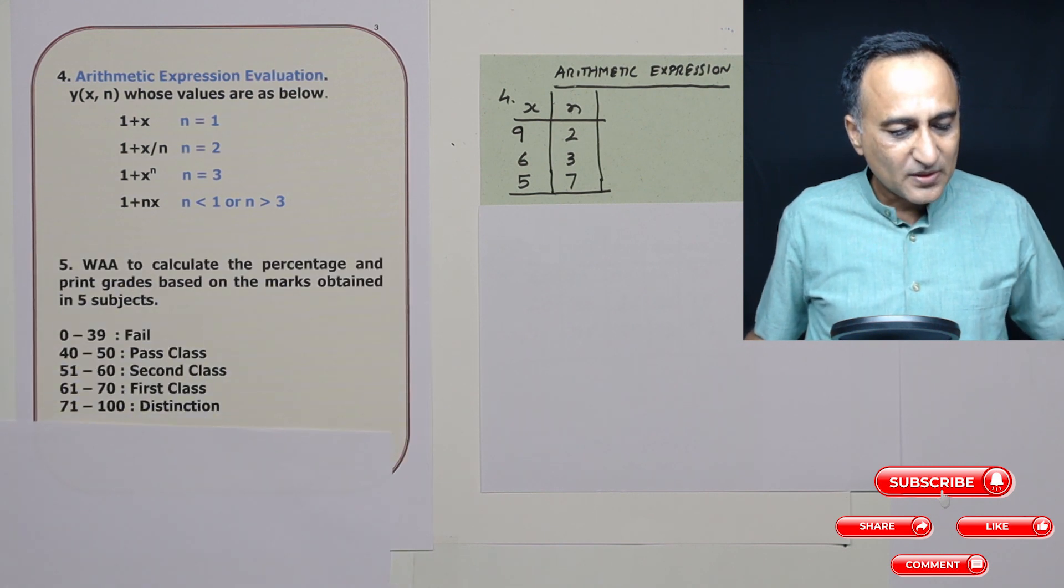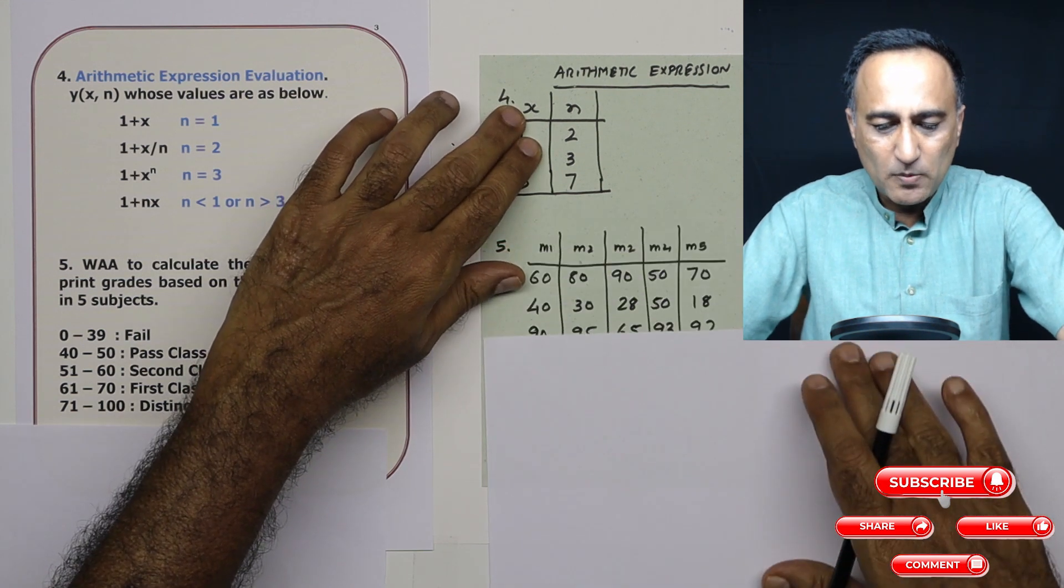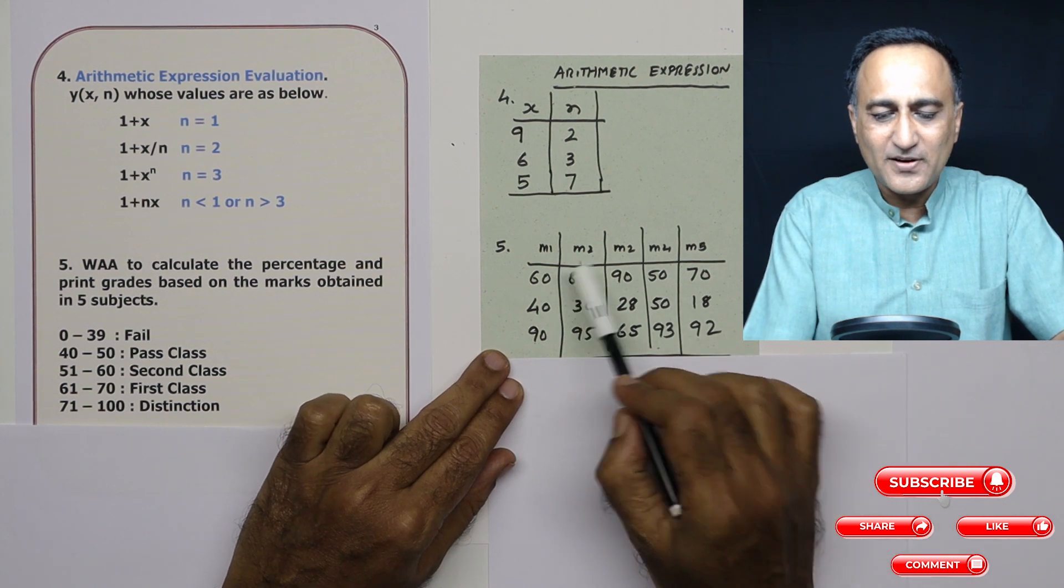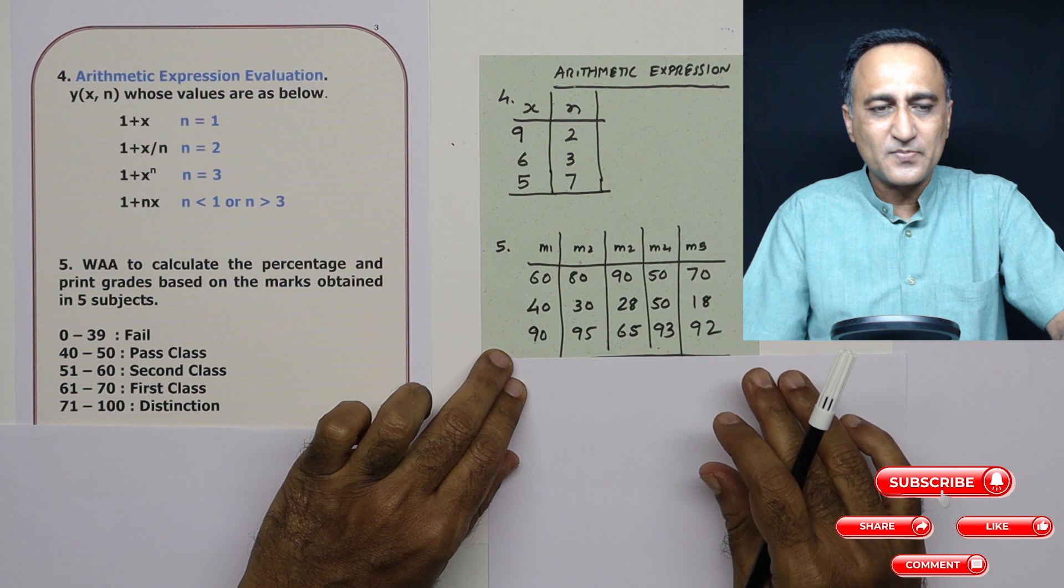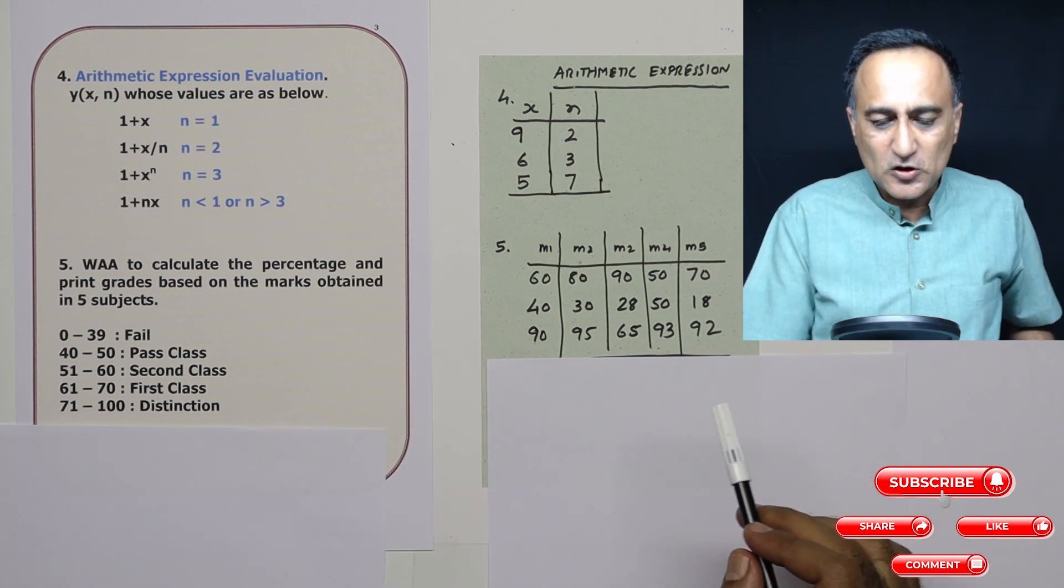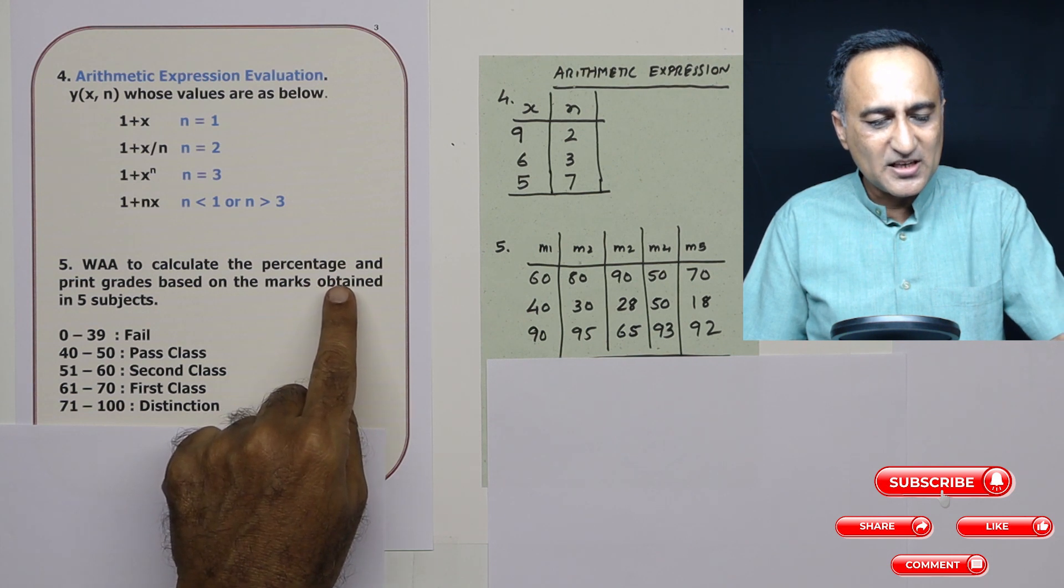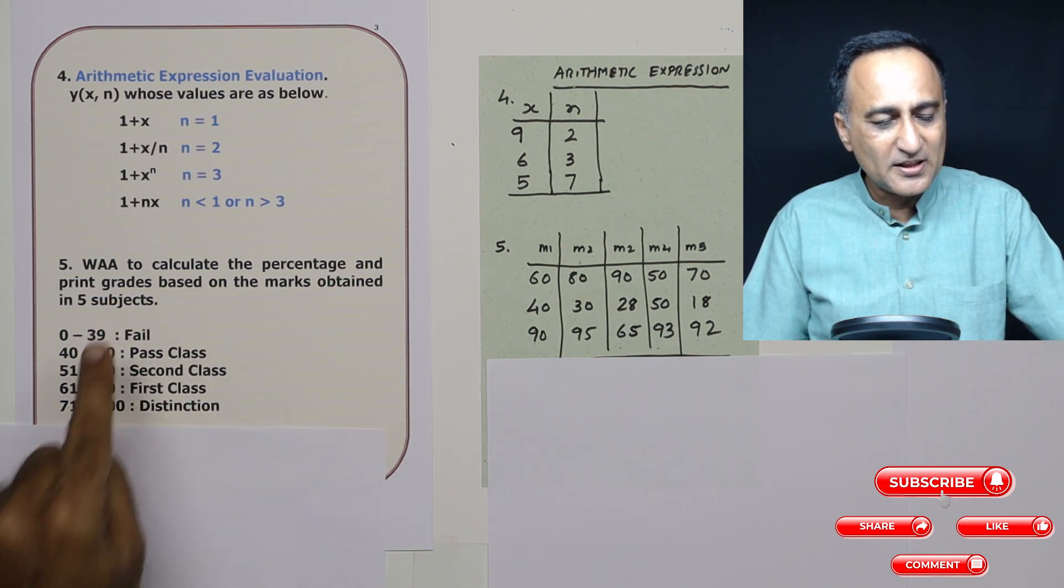Then next one, this is your school grades. So before taking a look at the problem, assume a school or a class conducts a first term test in five subjects. And these are the marks of some three random students. So based on the marks, you have to determine what is the percentage and then print the grades based on the marks obtained in the five subjects.